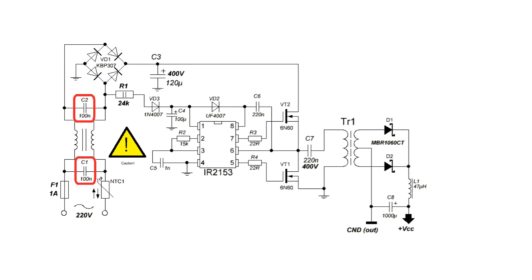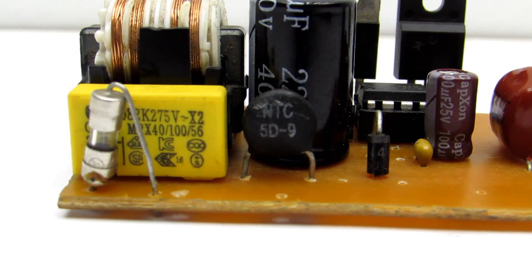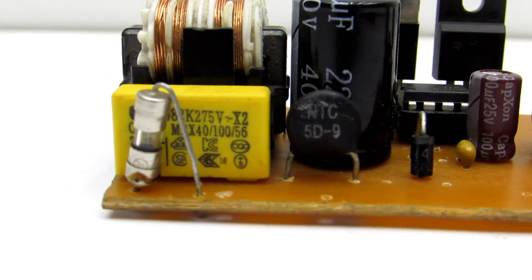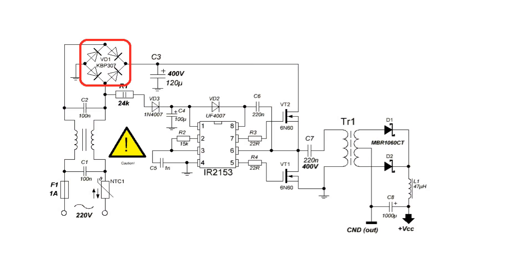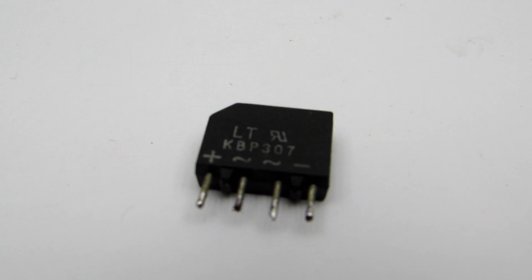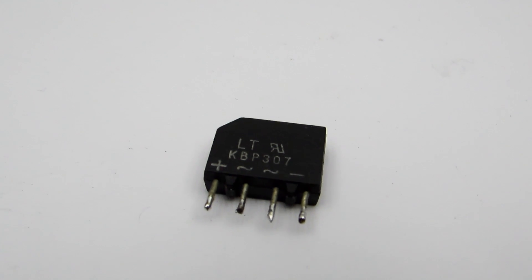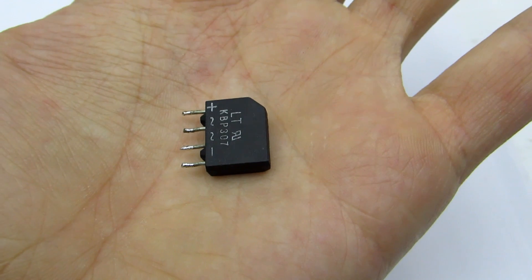The capacitors in the filter circuit shouldn't be less than 250 volts, with a capacitance of 0.33 to 0.1 microfarad. The diode bridge should have a voltage not less than 400 volts and a current of at least 1 ampere. It can be assembled from separate diodes.